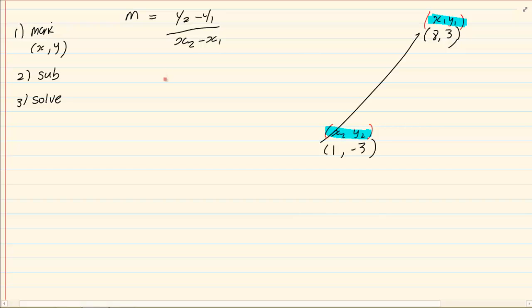Then we simply substitute what we have. So we've got y2 is negative 3 minus y1 is 3 all over x2 is 1 minus x1 is 8. We have minus 6 over minus 7 which is equal to 6 over 7. So our gradient is 6 over 7.